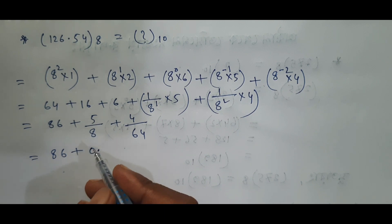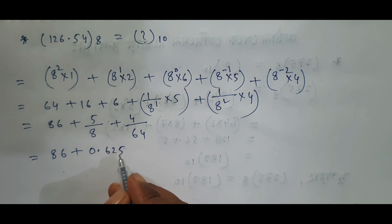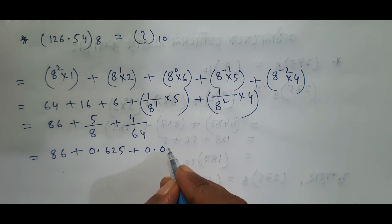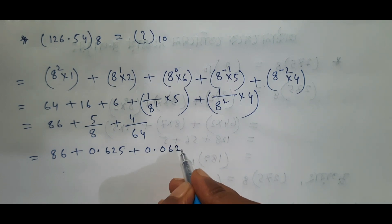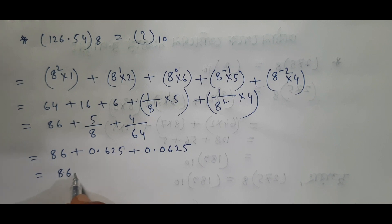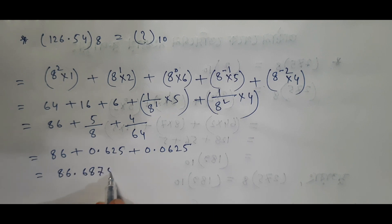0.625. 4 divided by 64. 0.0625. 0.0625. The result is 86.6875. 86.6875.